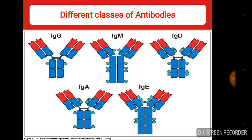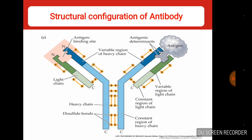Here is a picture of different classes of antibody. First is IgG, IgM, IgD, IgA, and IgE.